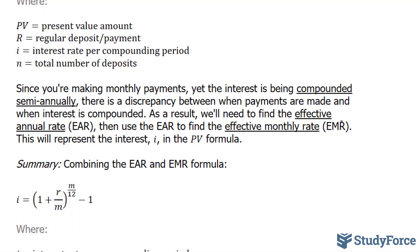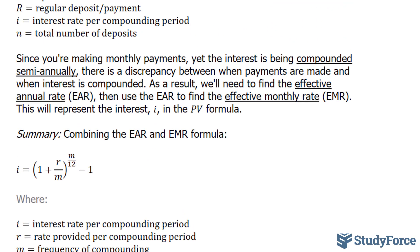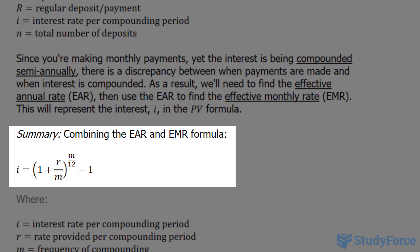So to combine the effective annual rate formula and the effective monthly rate formula, which, by the way, look like this, we end up with this formula right here. So let's figure out what our i value will be, specifically in this case.